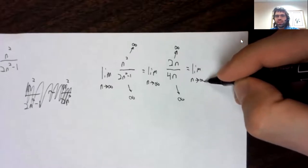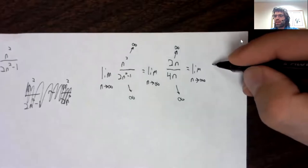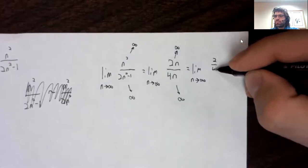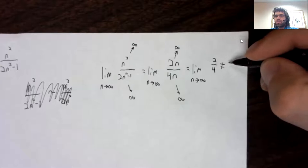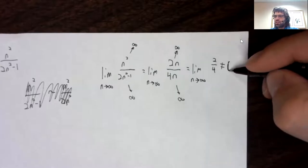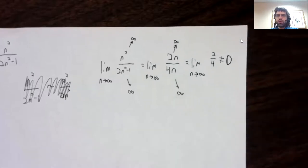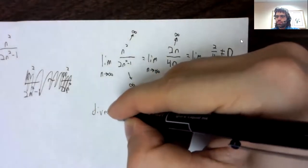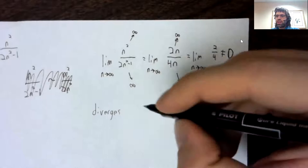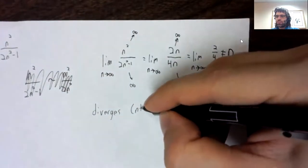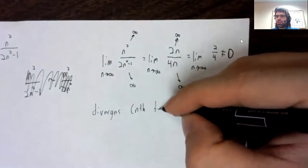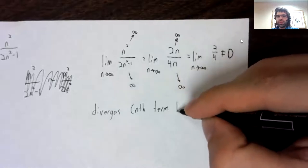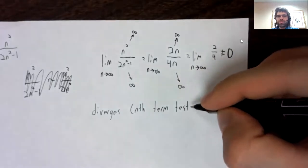So we take the derivative again, and we find that the limit is not zero. So this diverges by the nth term test.